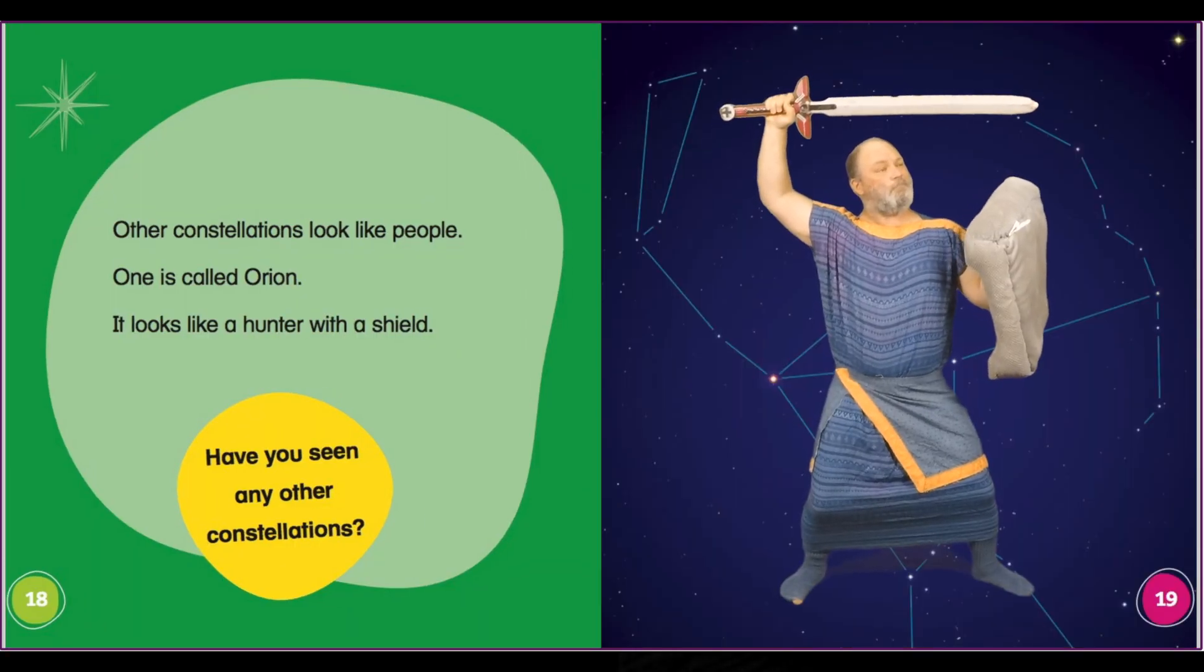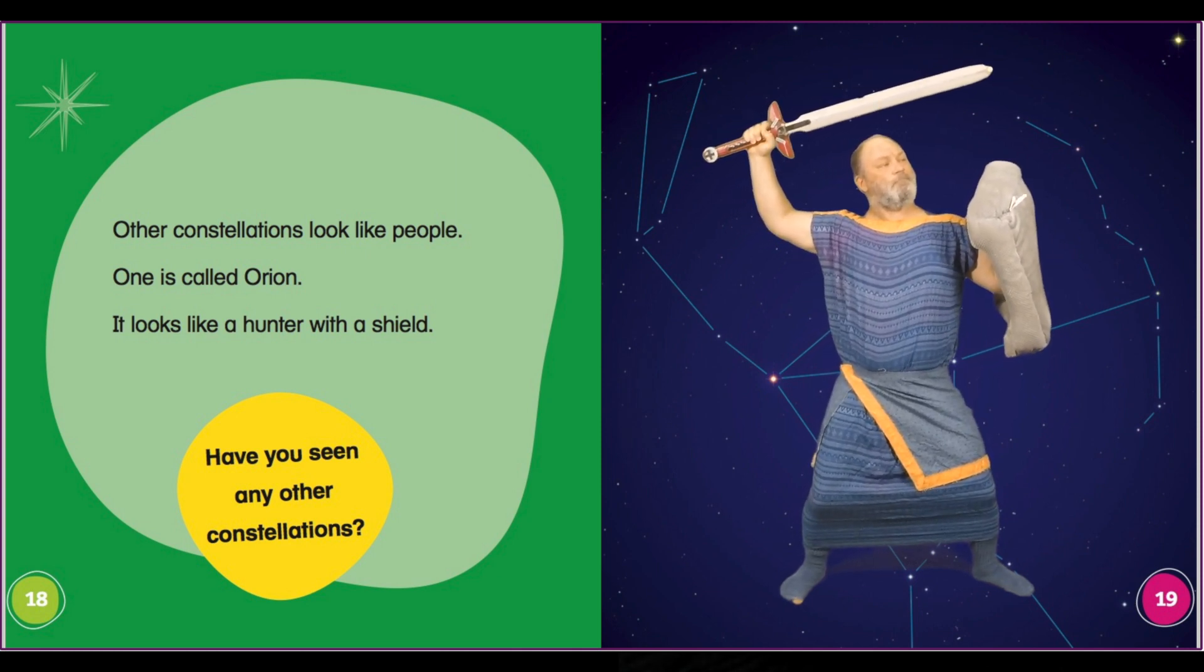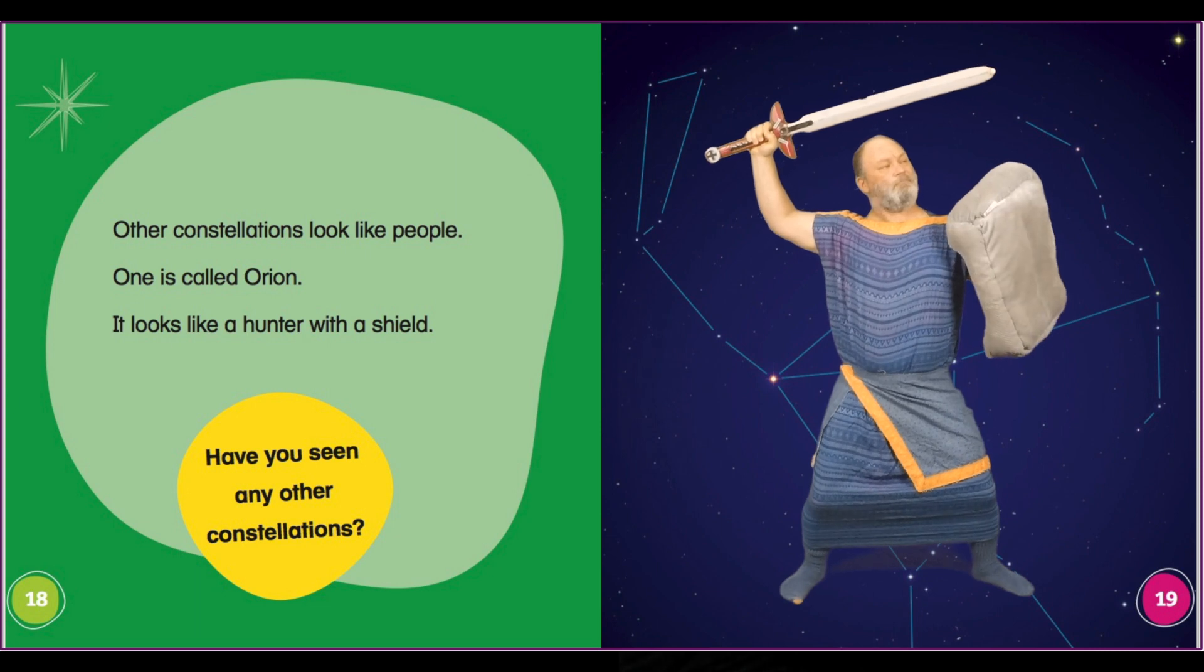Other constellations look like people. One is called Orion. It looks like a hunter with a shield.